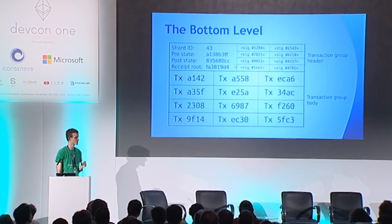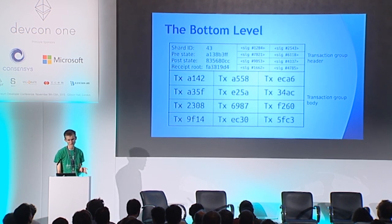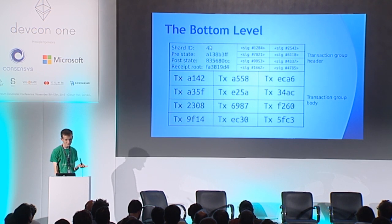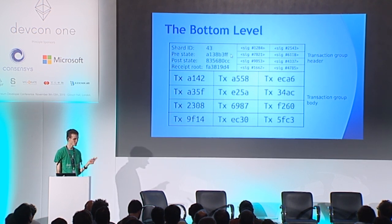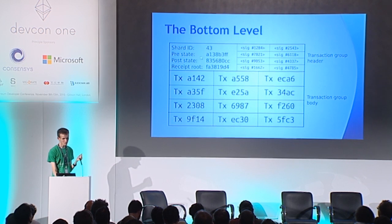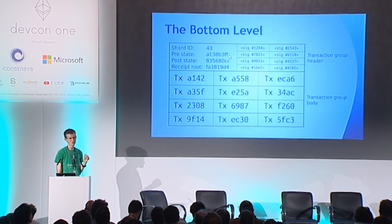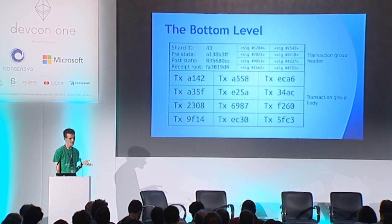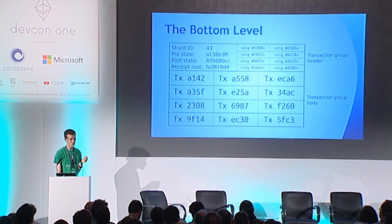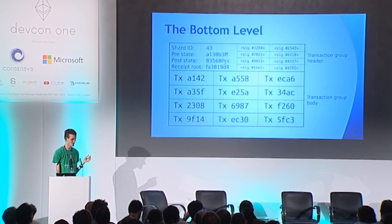The header contains two main components. The left side contains a shard ID, then a pre-state root, a post-state root, and a receipt root. The pre-state root basically says that before these transactions were applied, the state root of shard 43 was this. The post-state root says that after applying all of these transactions, the state root of shard 43 is going to be this.